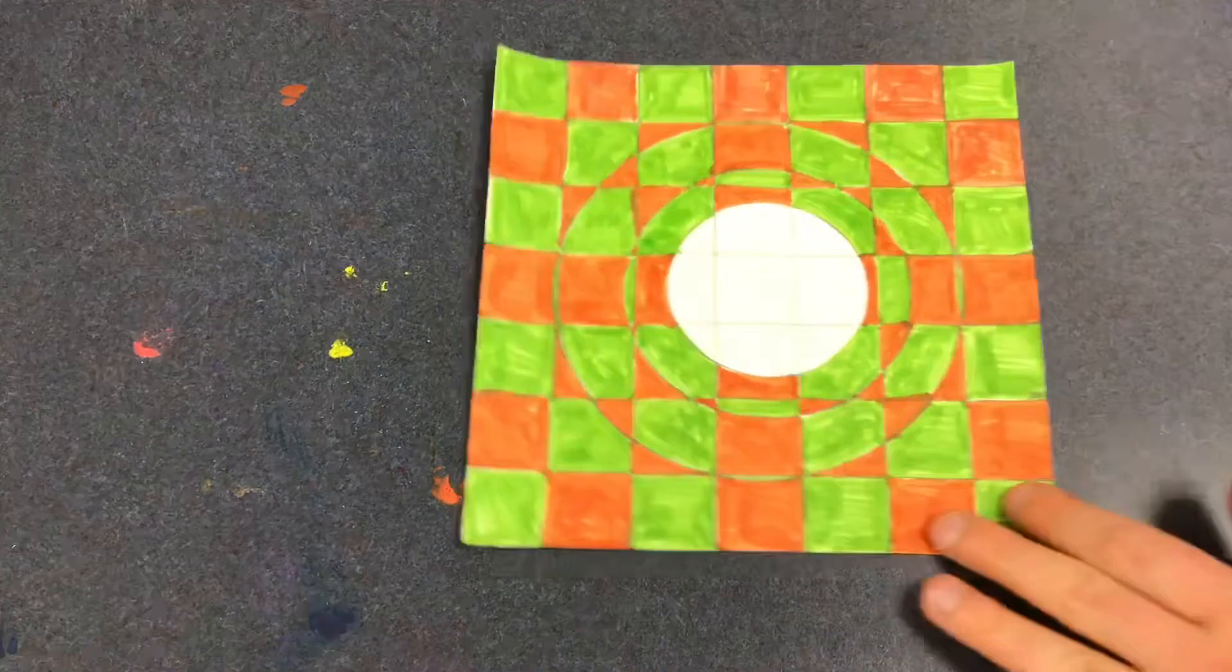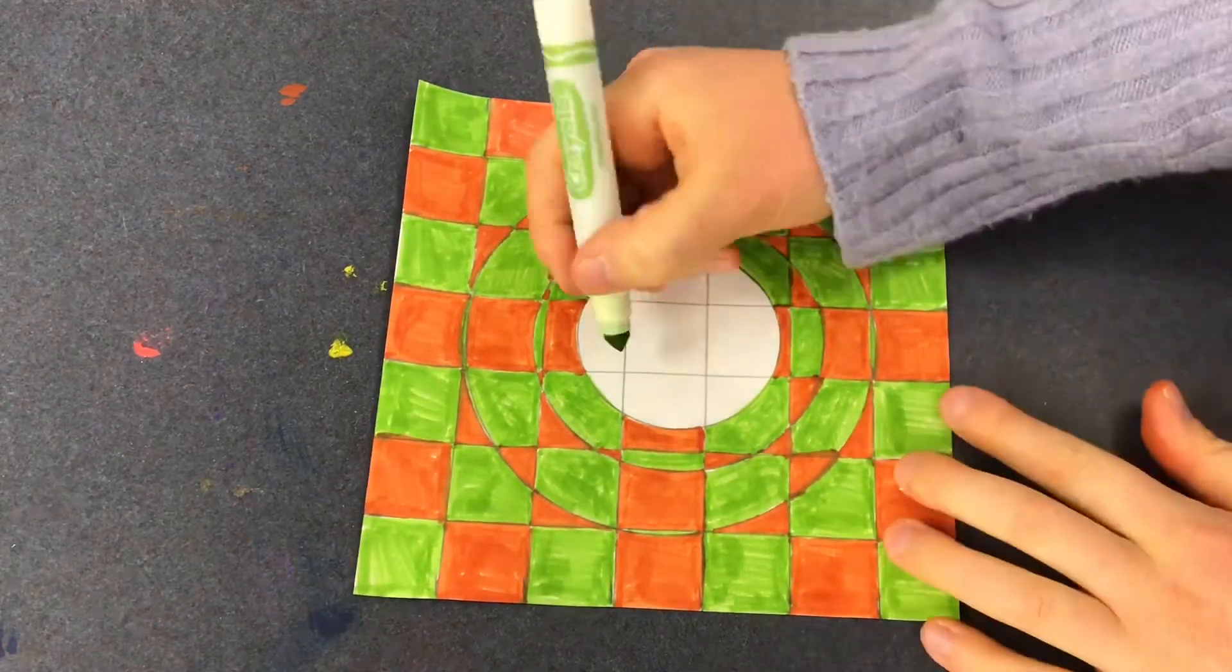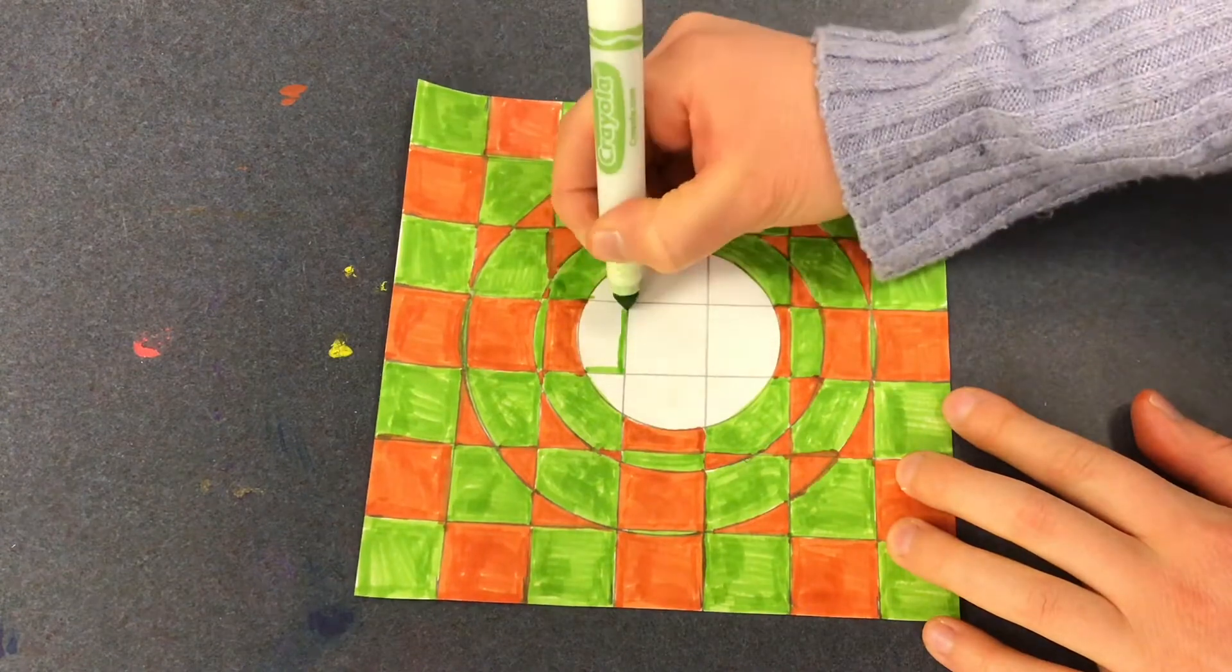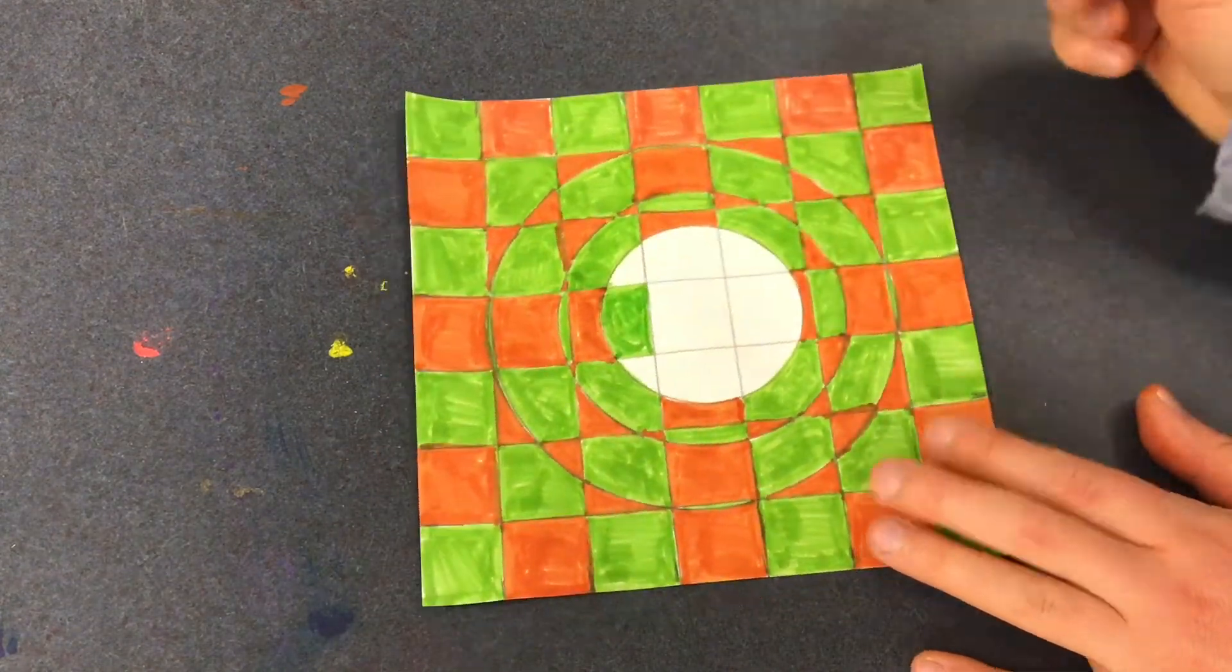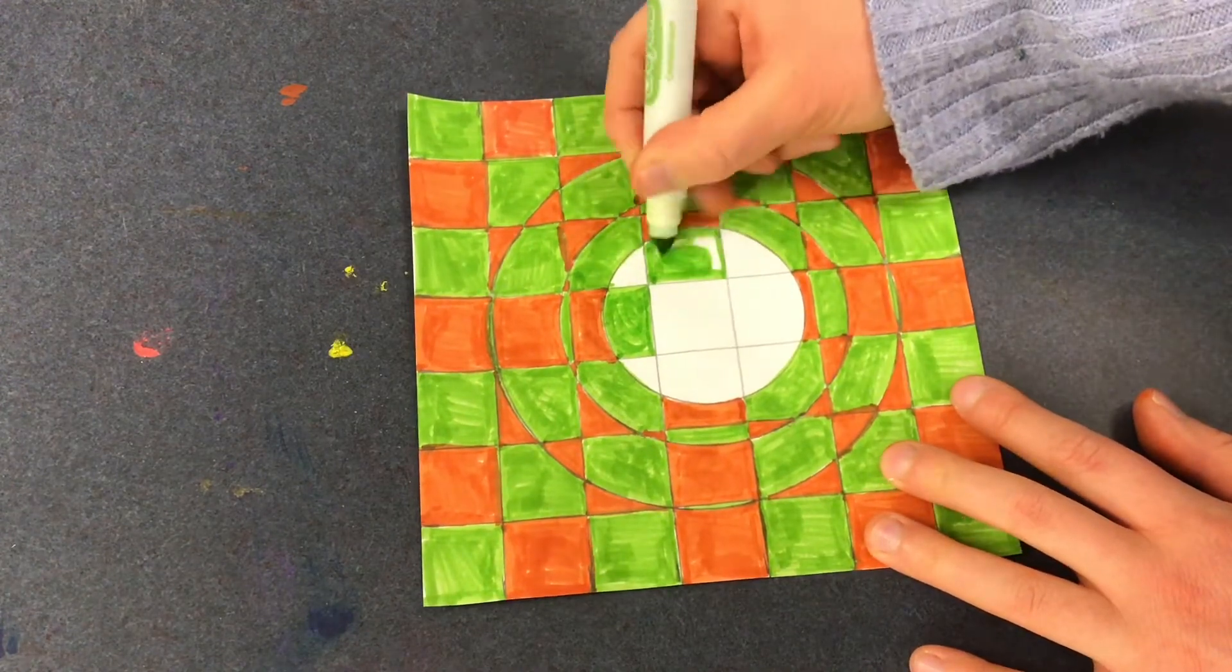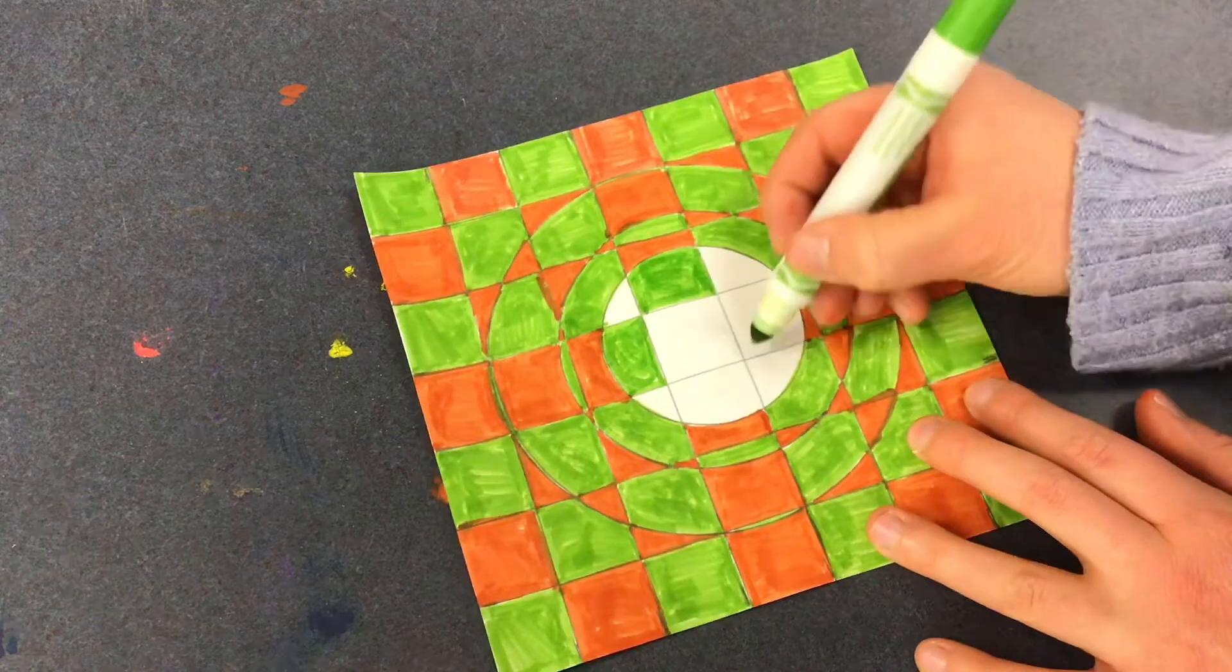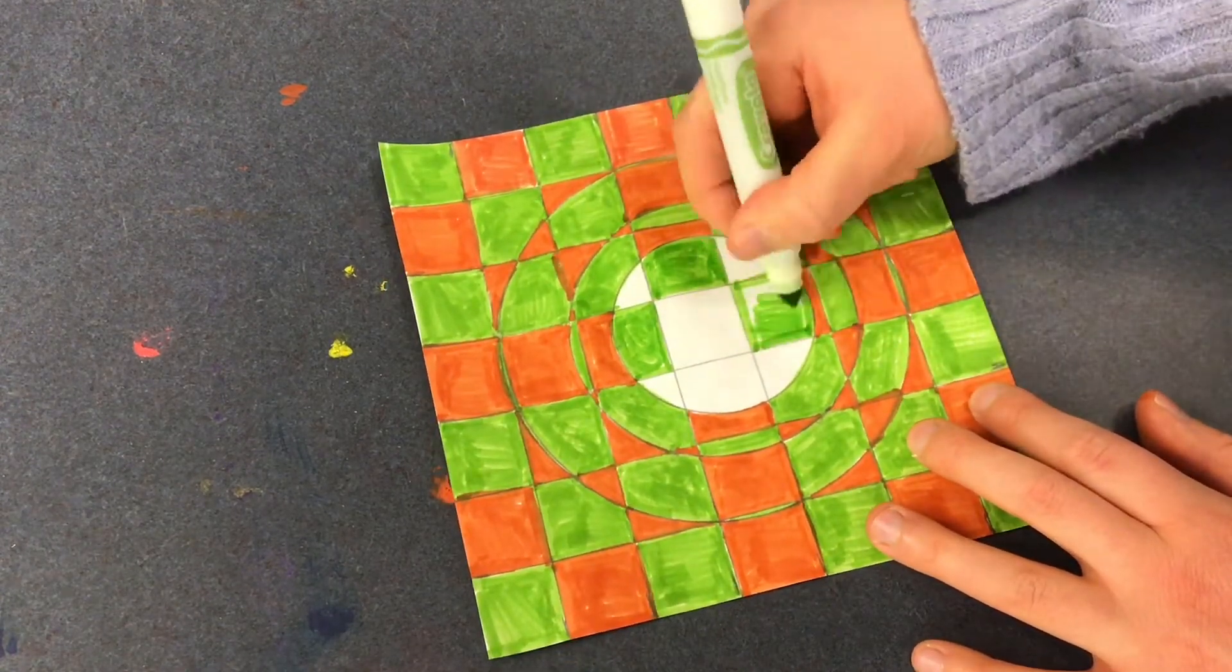Okay here I go into the last ring of the circle and you guessed it once again the squares will change colors. This last part is always the easiest because by now you've probably got the pattern. You can finish this pretty quickly.